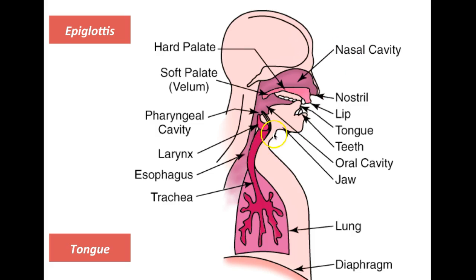We notice that when we produce voiceless sounds, our Adam's apple does not vibrate, but when we produce voiced sounds, it vibrates. The most classical example is the 'th' sound: when we produce the voiced 'th,' our Adam's apple vibrates, whereas when we produce the voiceless 'th' — in words such as 'think' — it does not make our Adam's apple vibrate.